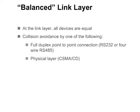DNP3 uses a balanced link layer. With a balanced link layer, all devices are considered equal. This means that some sort of collision avoidance is necessary. This can be accomplished by full duplex connection so that communications may flow in both directions simultaneously without conflict, or via media access control, such as carrier sense multiple access, CSMA, or carrier detect, CD, at the physical layer.